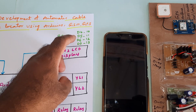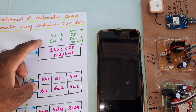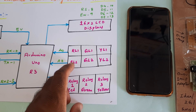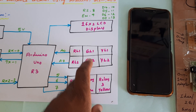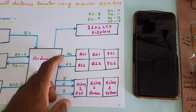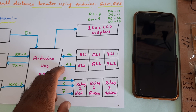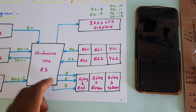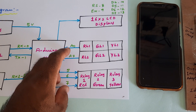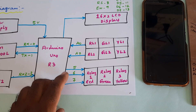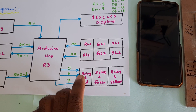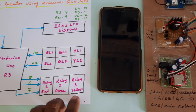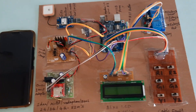The LCD pins RS, Enable, D4, D5, D6, D7 are connected to GPIO pins 8, 9, 10, 11, 12, 13. We are using RL1, RL2, GL1, GL2, YL1, YL2 connected to A0 through A5. Pins 5, 6, 7 are connected to relay 1 and relay 2 for the red cable, green cable, and yellow cable.